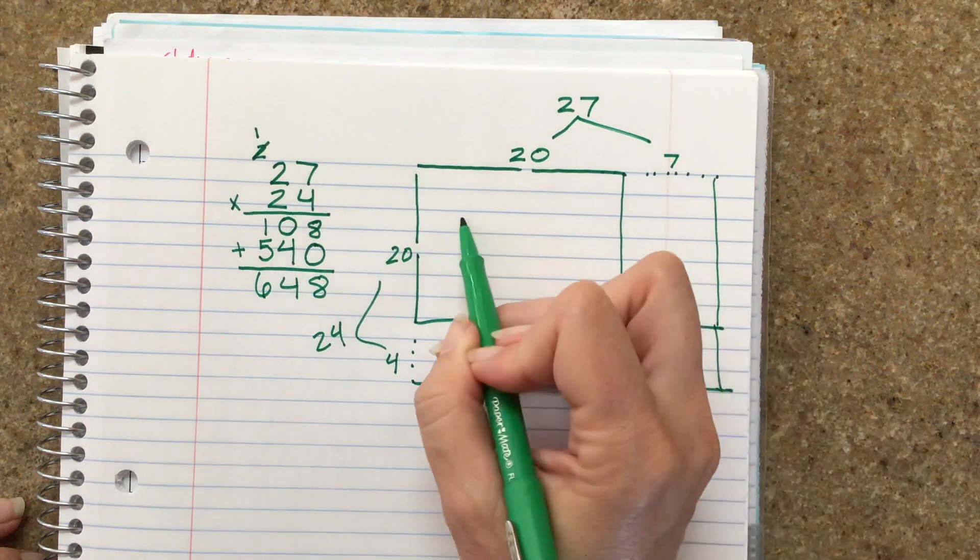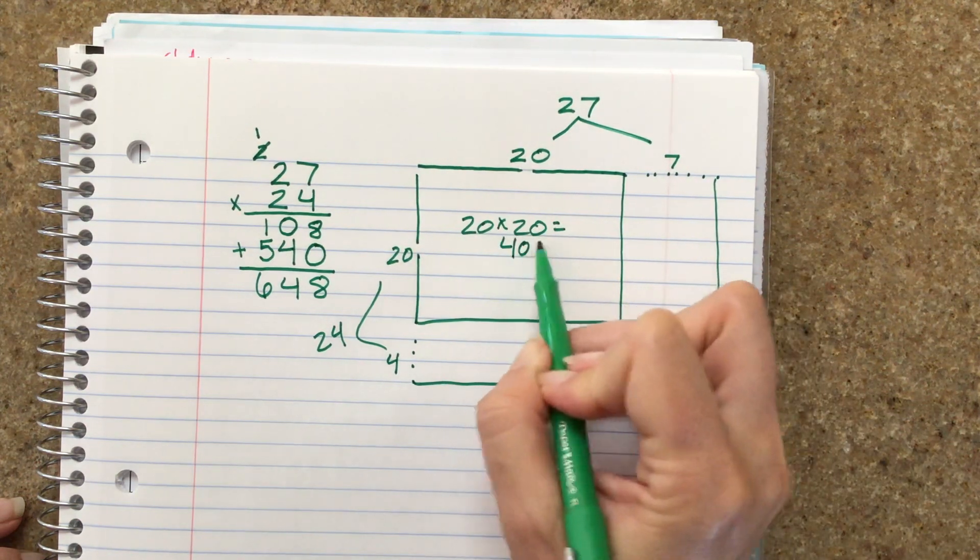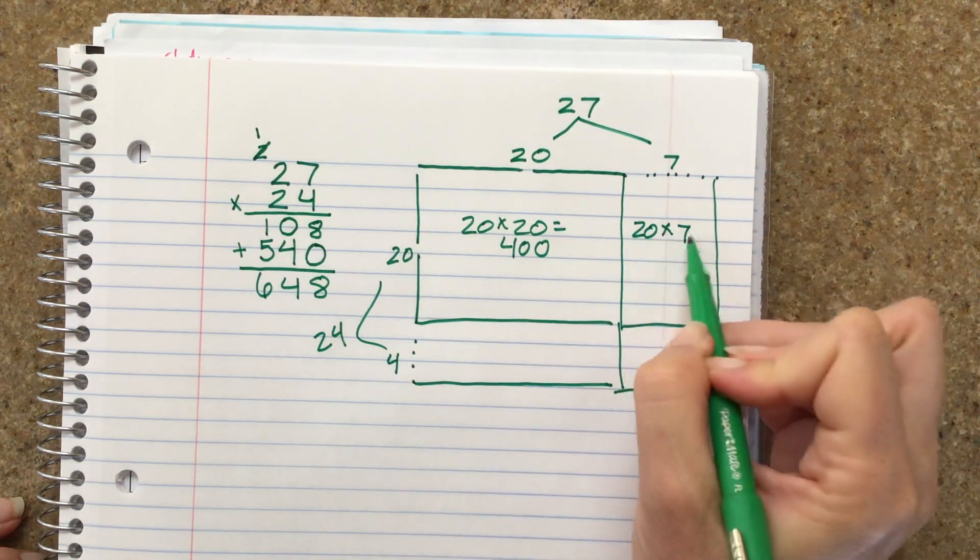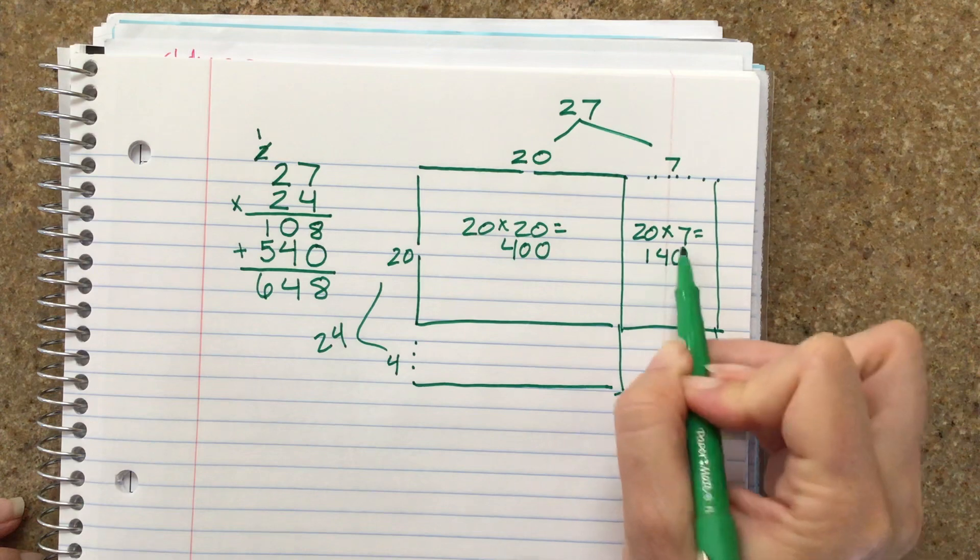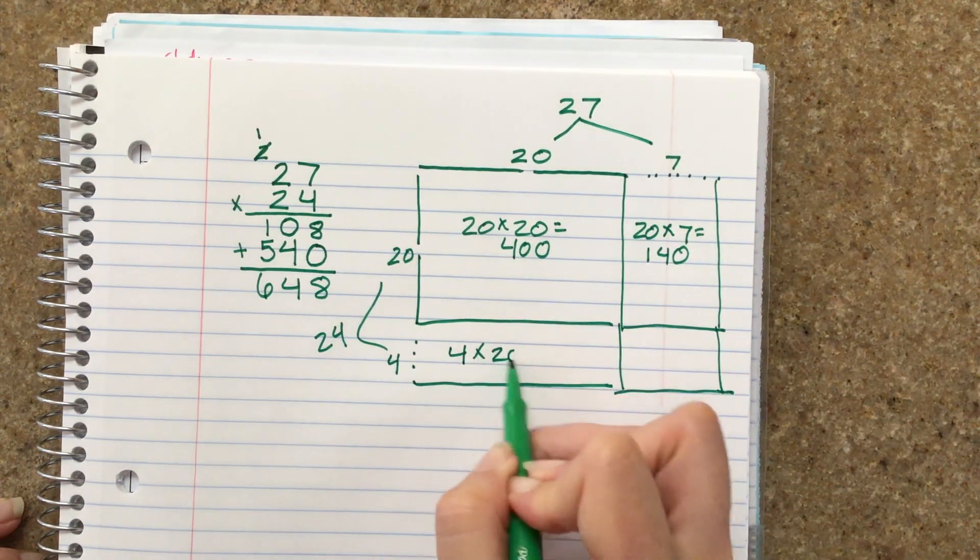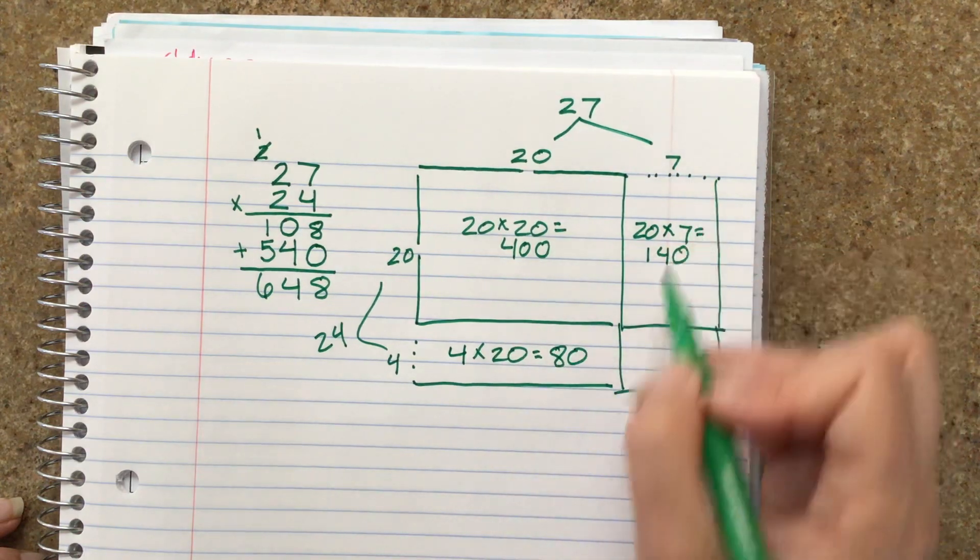So in here we have 20 times 20, which is 400. Here we have 20 times 7, 140. Here we have 4 times 20. And here we have 4 times 7.